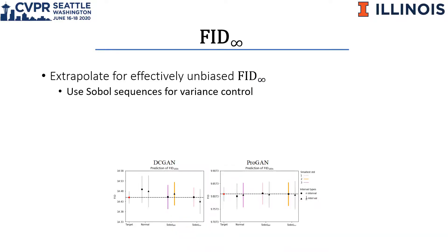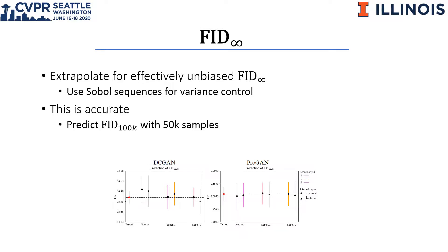We show how to extrapolate with variance control to get unbiased FID infinity. Both sequence samples point more evenly to give us better estimates of the unbiased score. These figures show how extrapolated predictions of FID 100k are very good, meaning we can rely on predicted FID infinity.